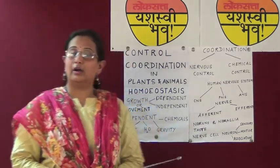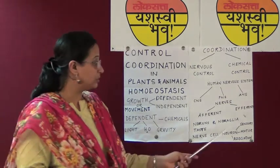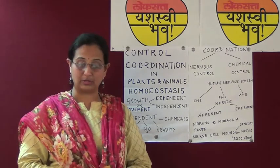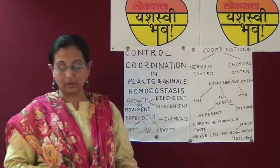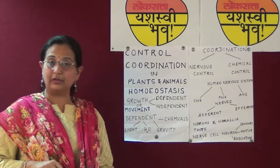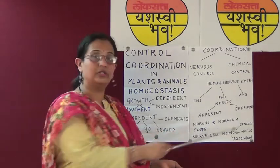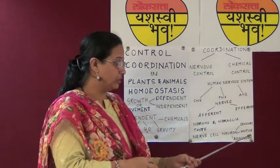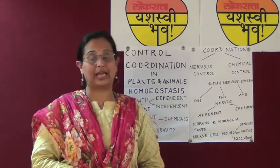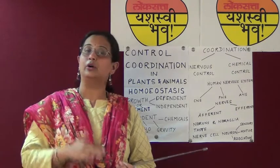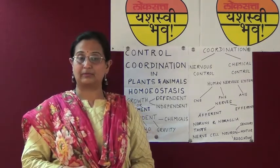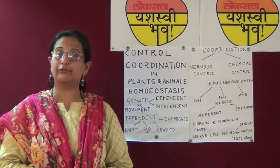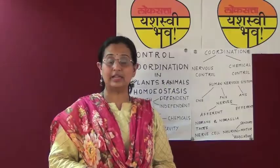Neurons on the basis of function are differentiated into sensory neurons, motor neurons, and association neurons. The sensory neurons carry information from the sense organs to the brain and spinal cord. The motor neurons carry information from the brain and spinal cord to the muscular parts. Whereas the association neuron performs the integrative function of the nervous system.